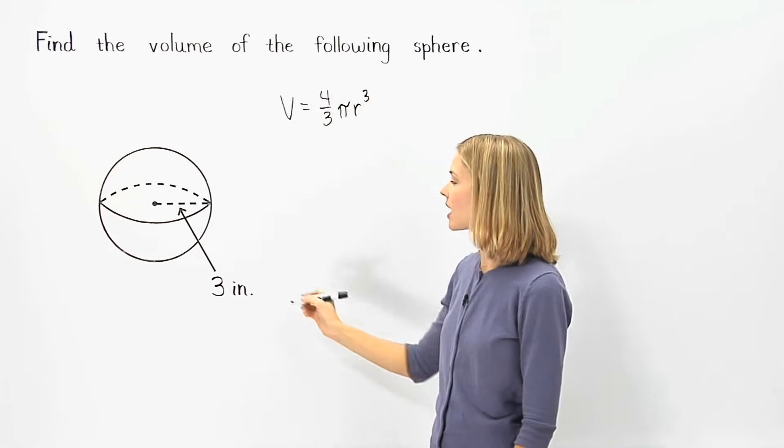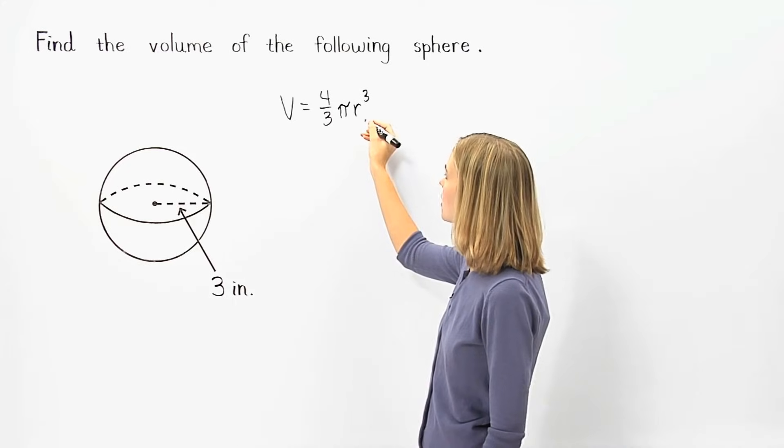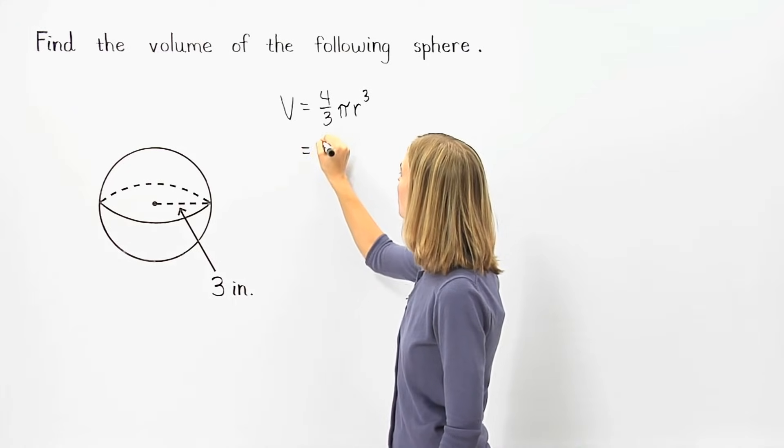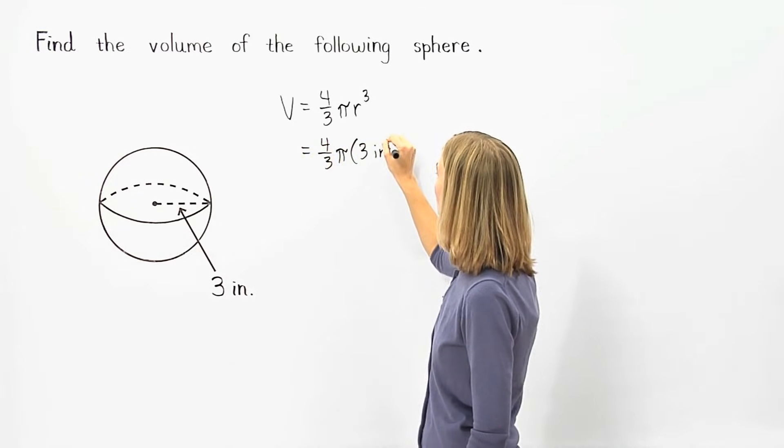So here, since the radius is three inches, we can plug three inches in for the radius in our formula, and we have four-thirds times pi times three inches cubed.